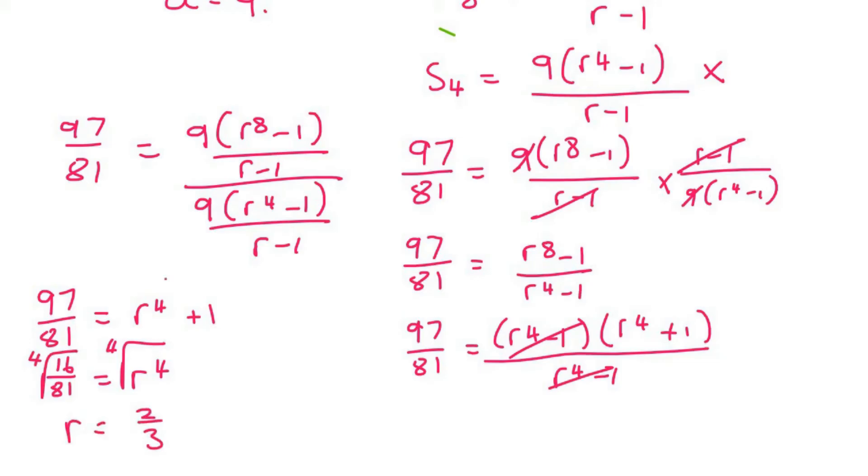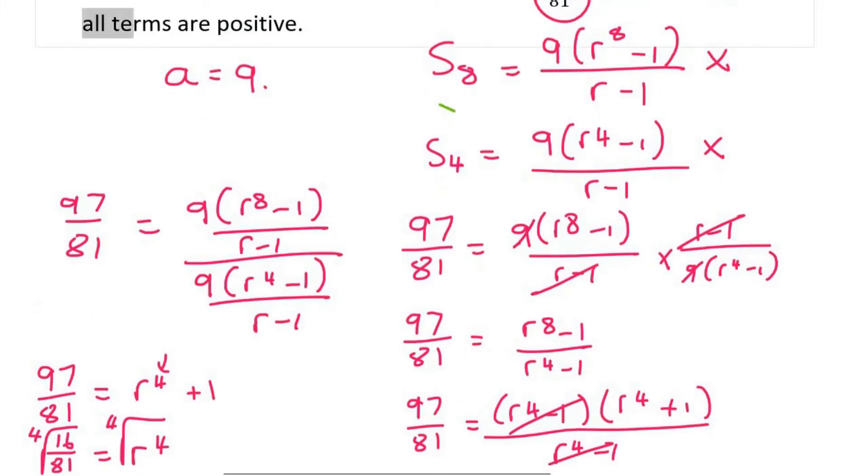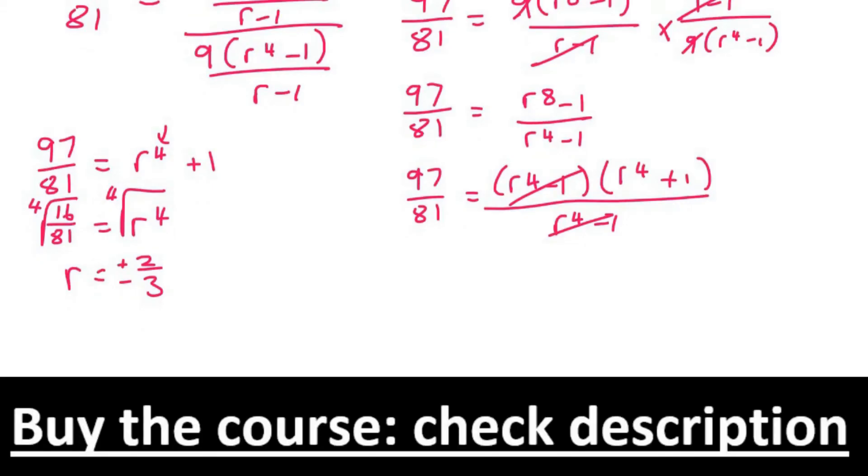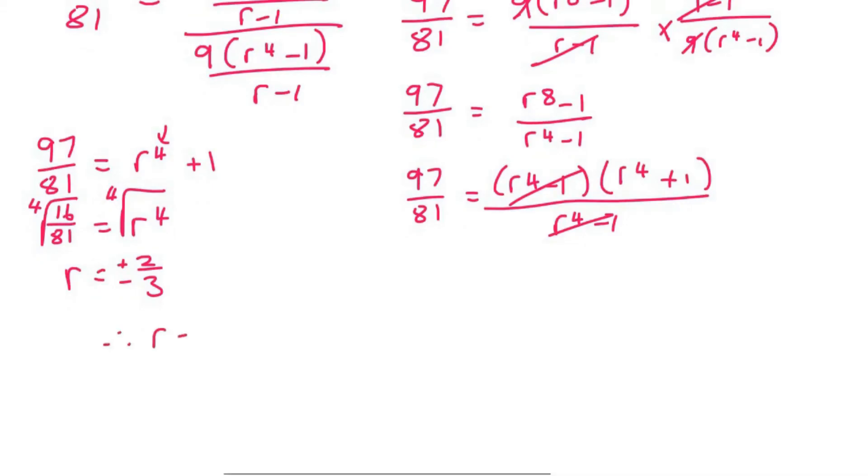Technically, when you're taking a root of a positive number, you should have a plus and a minus. But it's only going to be the positive one because they've told us that all terms are positive. So if my R value is negative 2 over 3, then if A, which is term 1, is 9, then term 2 would be 9 times negative 2 over 3. And so we would start including negative numbers. And so that's not going to be correct.